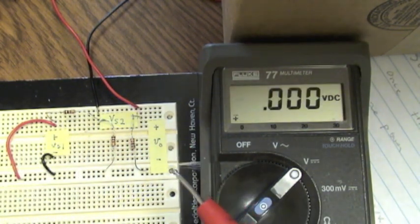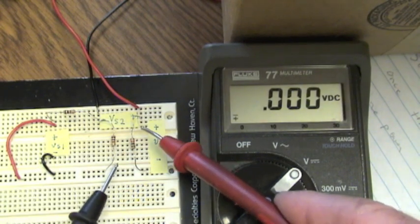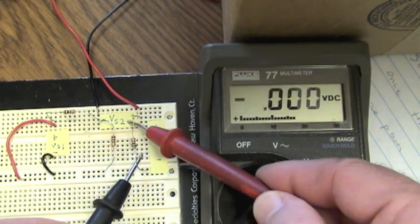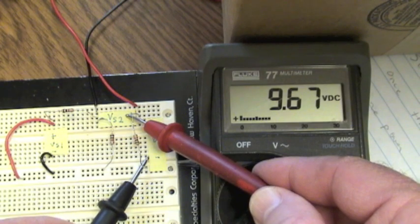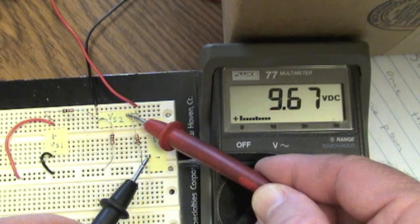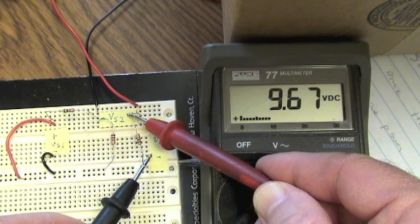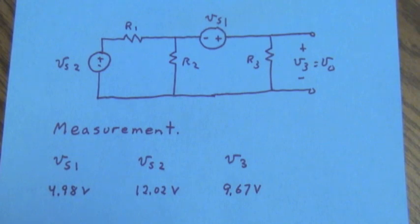Now let's go to the output voltage, Vout, which we expect to be 9 and two-thirds volts. Well, we are measuring 9.67 volts, essentially 9 and two-thirds volts. So the results are as we expect to within experimental error. So let's record the measurements that we have so far.